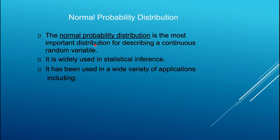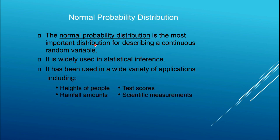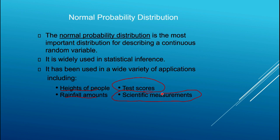The normal distribution is widely used in a variety of applications, including the distribution of heights of people in the population. Rainfall amounts tend to be normally distributed. Test scores are often normally distributed — for example, IQ test scores have been studied extensively and tend to follow a normal distribution. Many scientific measures in the natural world and in economics also tend to follow a normal distribution.